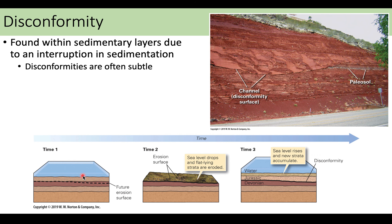Here you can see at time one we have four layers that are underwater with a future erosion site shown. Then erosion cuts the surface a bit on a diagonal. At time three, looking at that column, the contact between two layers is not exactly horizontal — it's not parallel to the layers above and below — meaning something is missing. We lost some information in between because those original layers are now gone from erosion.